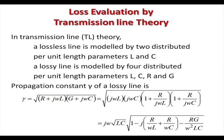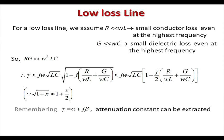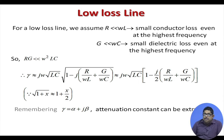The propagation constant γ of a lossy line is given by γ = √((R + jωL)(G + jωC)). For a low-loss line with small conductor loss even at the highest frequency, R must be much smaller than ωL. This condition must be satisfied for the line to be usable as a low-loss transmission line.